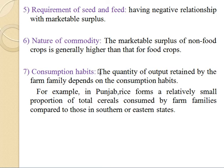The last factor is consumption habits. The quantity of output retained by the farm family depends on the consumption habits. For example, in Punjab, rice forms a relatively small proportion of total cereals consumed by farm families compared to those in southern or eastern states. In this way, in this chapter we have seen the meaning of producer surplus and its types — marketable surplus and marketed surplus.